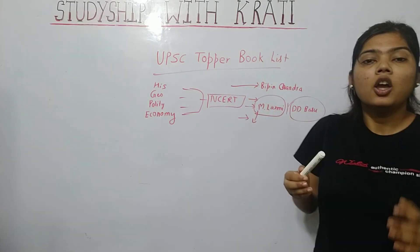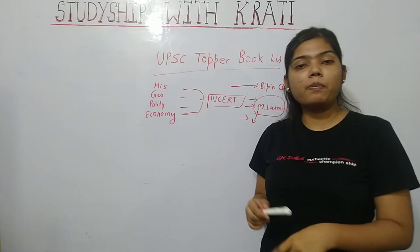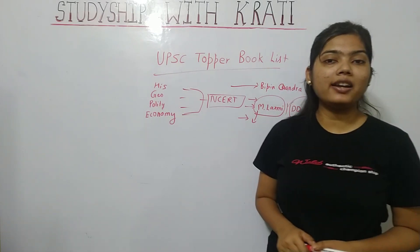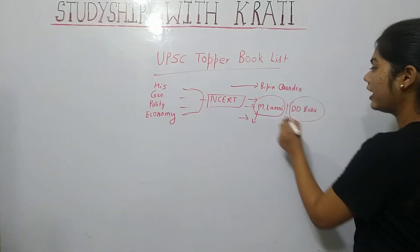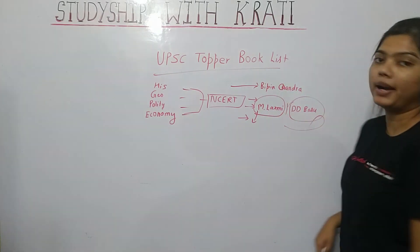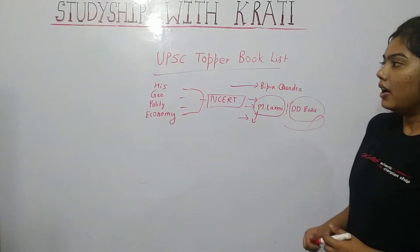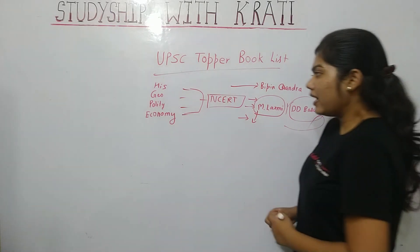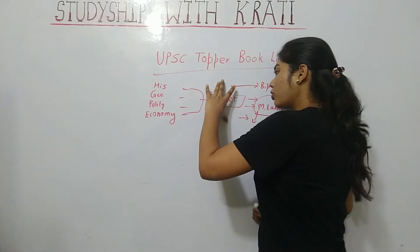I bought D.D. Basu and literally could not read more than 2 pages. It was a kind of pressure on my head to read it, and when that kind of pressure comes, it's better to step back. Don't try to do too many books — it is better to read a proper, focused list.